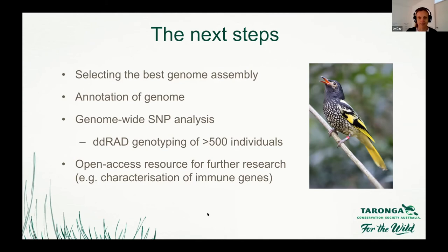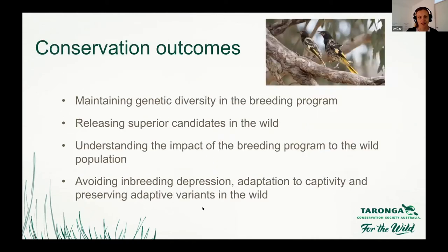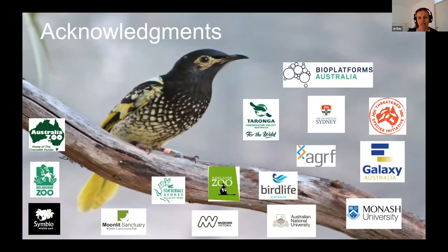The next steps are to select the best genome assembly, annotate the genome using transcriptome sequence data from three other Regent Honeyeaters, and then conduct genome-wide SNP analysis. We are conducting DD-RAD genotyping for over 500 captive and wild individuals to help answer these research questions. It is also hoped that the reference genome will become an open access resource for further research, including characterisation of genes associated with immunity, reproduction, and adaptation.